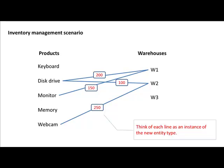We can think of 200 units of disk drive in warehouse one as something that is conceptually different from 100 units of disk drive in warehouse two. That is one stock; this is another stock. We have stocks of disk drives in two different places. And warehouse one has again two different stocks: 200 disk drives and 150 monitors. So each line can be thought of as an entity type in its own right.